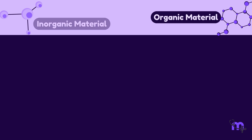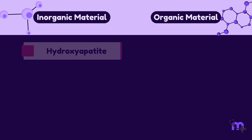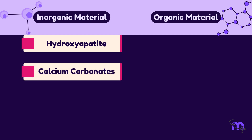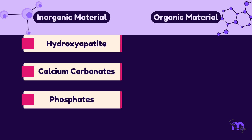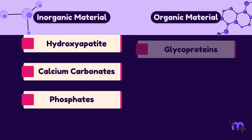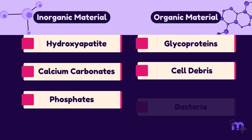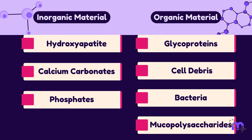Sialoliths are made up of organic and inorganic materials. The inorganic materials include minerals like hydroxyapatite, calcium carbonates, and phosphates. The organic materials include glycoproteins, cell debris, bacteria, and mucopolysaccharides.